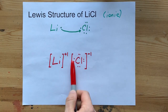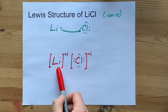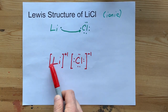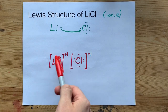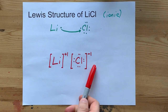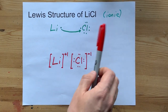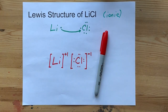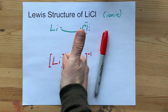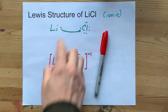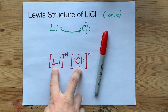This has a full outer shell. This has an empty outer shell, and the next one that's not shown is full. This is the Lewis structure — everyone's happy. Octet rule satisfied. Ionic compounds' Lewis structures have square brackets.